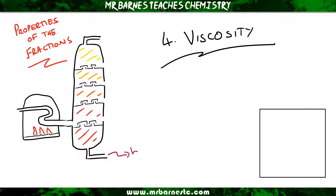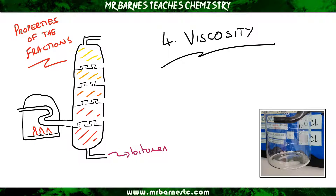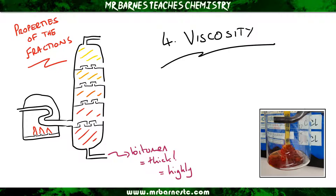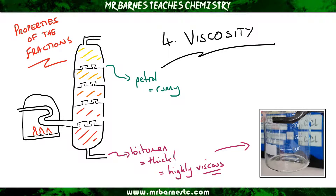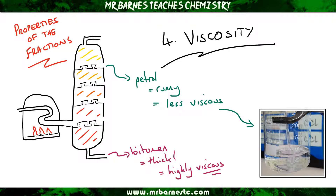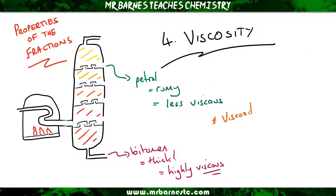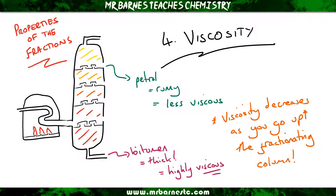The final property is viscosity, which is a measure of how thick or runny a liquid is. Starting at the bottom with bitumen — it's a nice thick liquid used to surface roads, so it's highly viscous, as you can see in the video. Petrol on the other hand is nice and runny, so it's less viscous — it flows easily. Therefore, viscosity decreases as you go up the fractionating column.